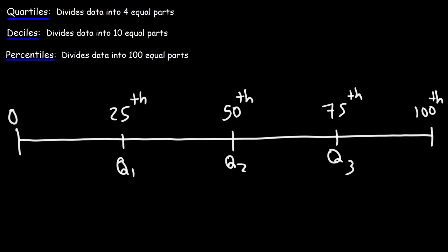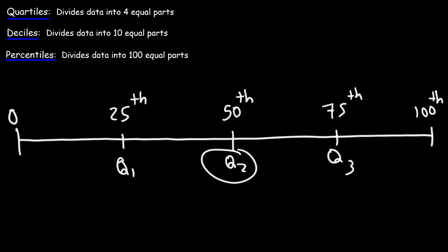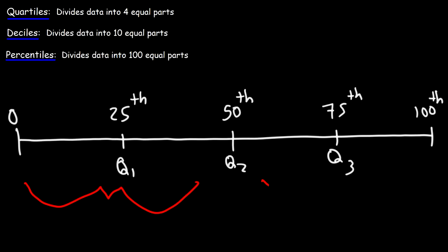Percentiles divide the data into 100 equal parts — think of percentage, where 100% represents the total of everything. Q2 is basically the median of the entire data. Q1 is the median of the lower half of the data, and Q3 is the median of the upper half of the data.